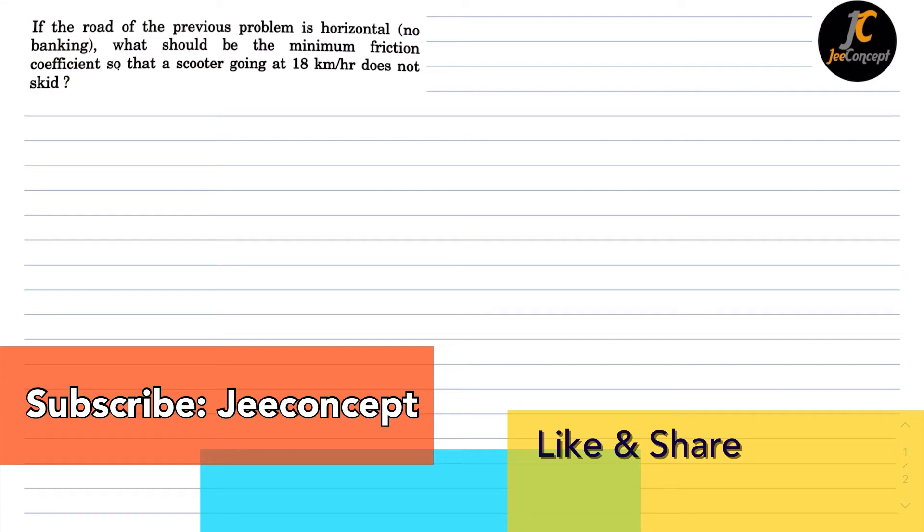Hello friends, in this video we will find the solution of the problem which says: if the road of the previous problem is horizontal, what should be the minimum friction coefficient so that a scooter going at 18 kilometer per hour does not skid?